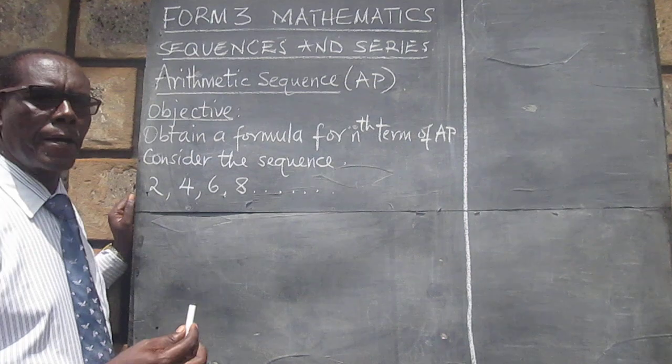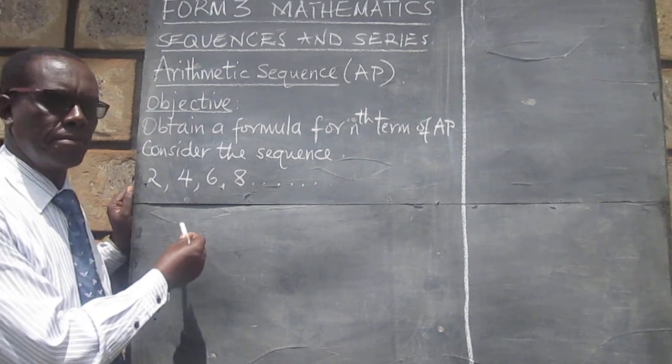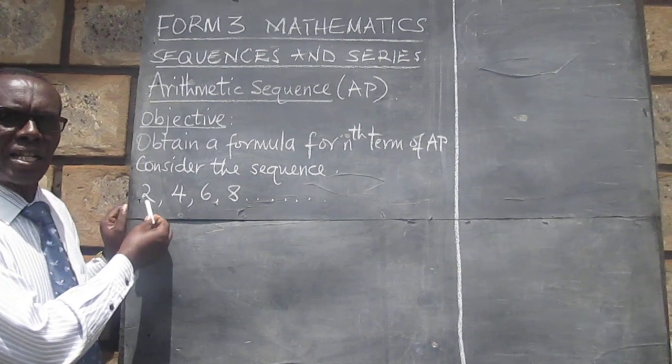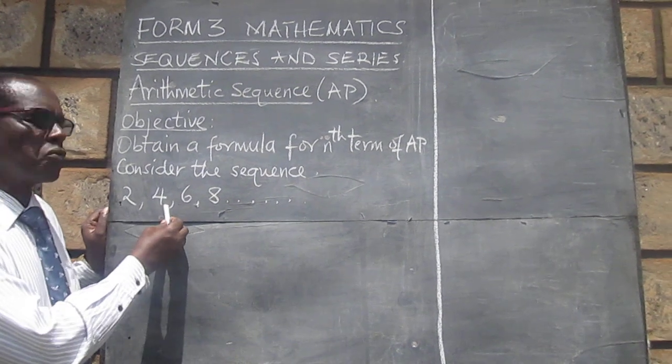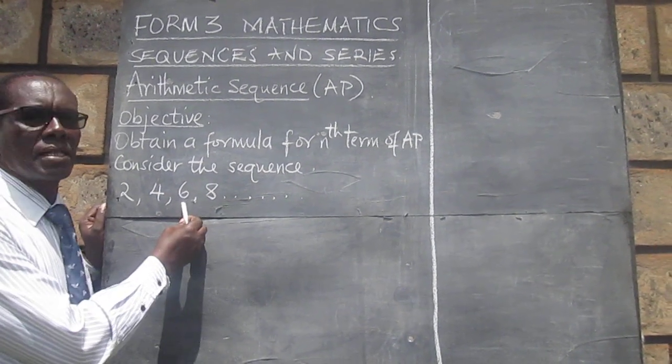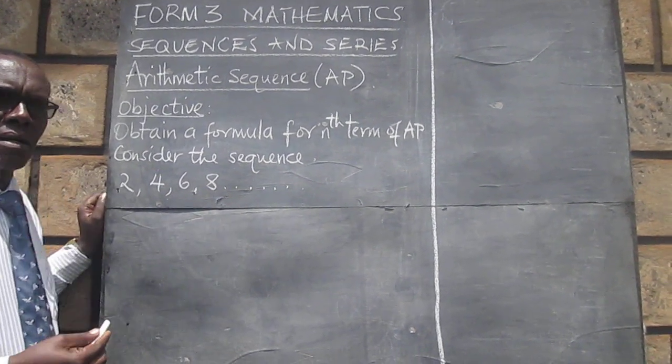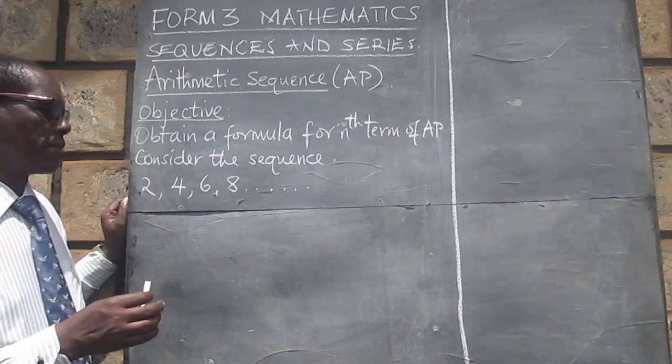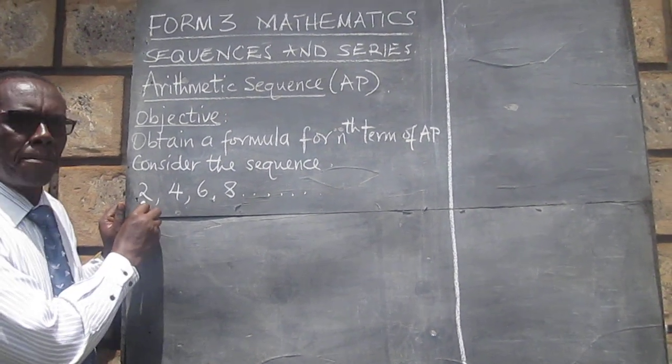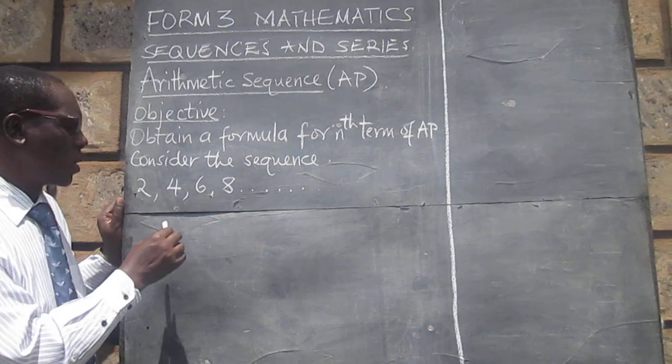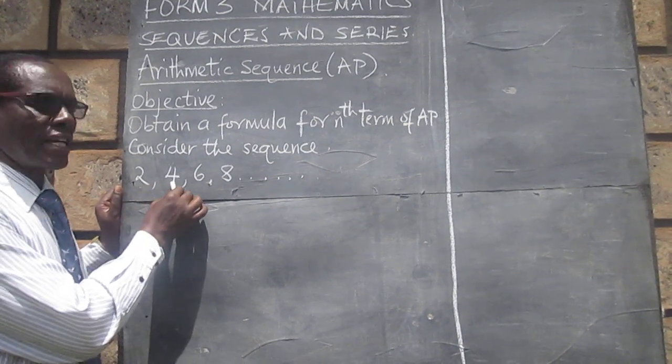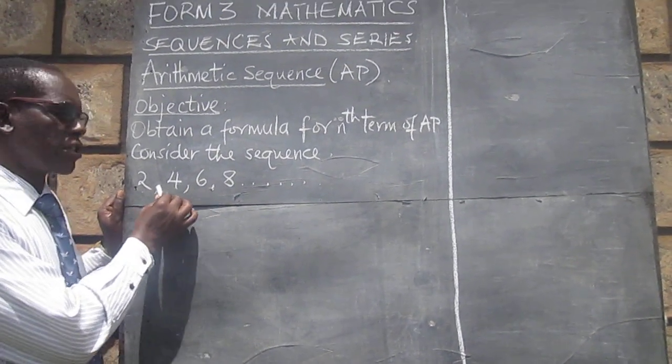If you look at the sequence I have put here, we are starting with 2, then we are going to 4, then 6, then 8. But it is easy to see that from the first term, which is 2, to the next term, there is a difference of 2.